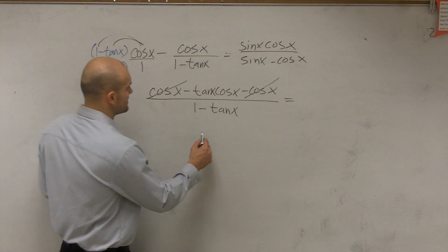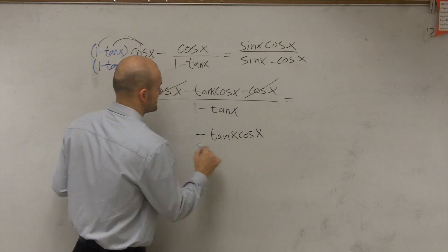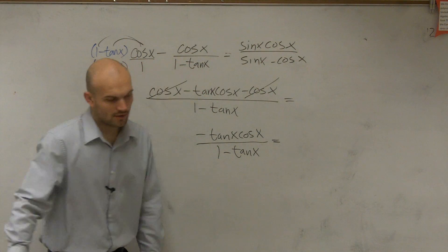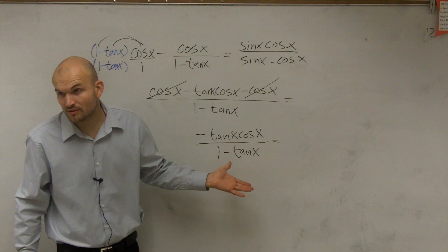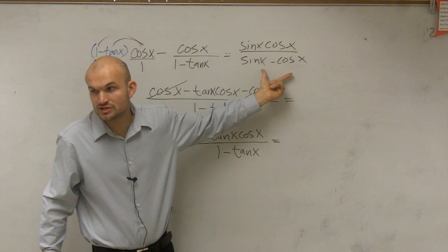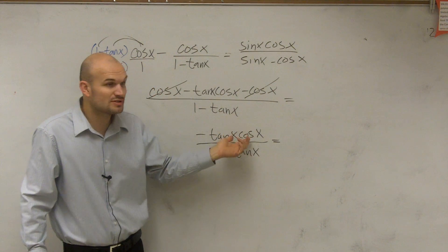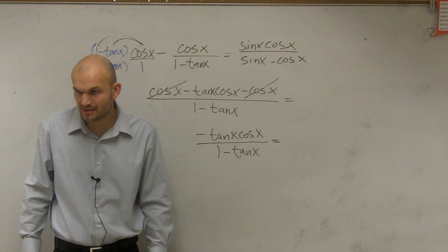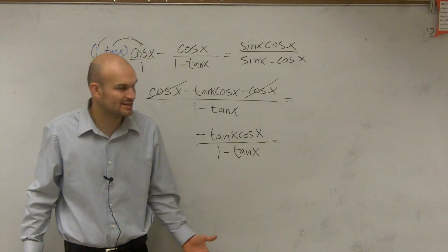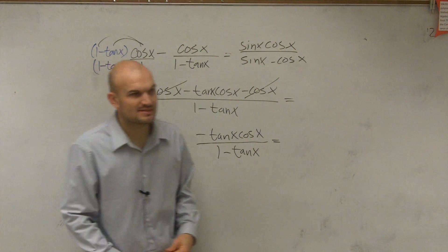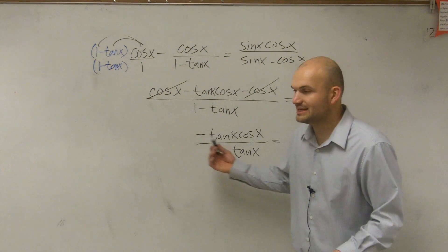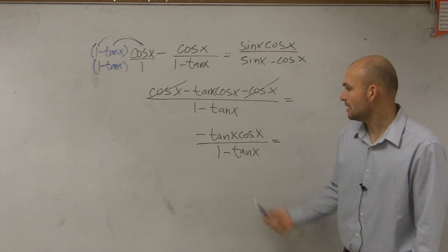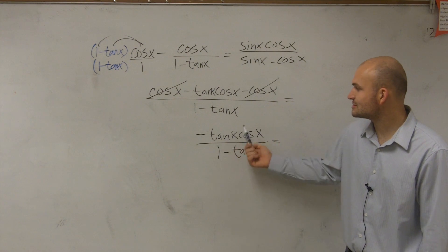And then what I have is a negative tangent of x cosine of x divided by 1 minus tangent of x. Now, this is where it's going to get a little confusing. So we're almost there. We kind of have something pretty similar. We have two terms multiplied up top and two functions subtracted on the bottom. The only problem is they're not the same. They're not the same terms being subtracted or even multiplied. On the bottom, I need to subtract sine of x minus cosine of x. Right now, I have 1 minus tangent of x. And up top, I have tangent times cosine.